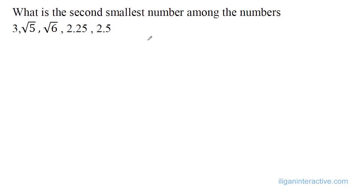What is the second smallest number among the numbers 3, square root of 5, square root of 6, 2.25, and 2.5?